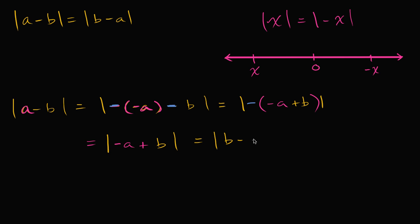B minus A. And we're done. We've just shown that the absolute value of A minus B is the same thing as the absolute value of B minus A. Hopefully you already felt pretty good about it by trying out a bunch of numbers and thinking about the number line. But this is literally just factoring out a negative sign and recognizing that property to make the same conclusion.